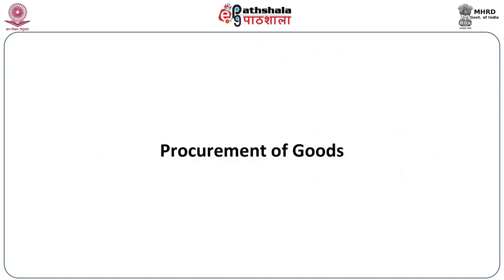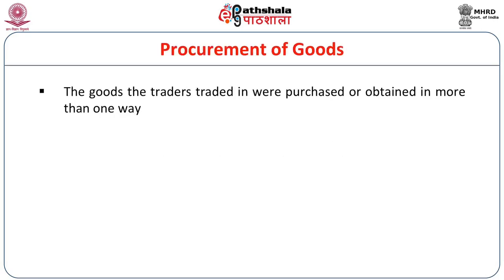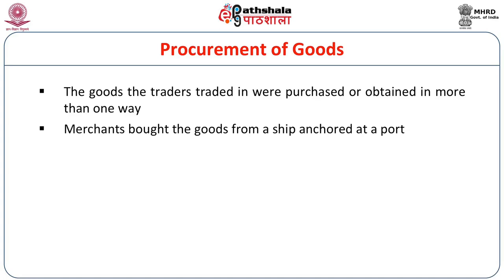Regarding the procurement of goods, the goods traders dealt in were purchased or obtained in more than one way. Merchants bought goods from a ship anchored at a port. Port is an important gateway to overseas trade and also an important place where economic activities — particularly unloading, loading, and merchandise activities — are performed. Port is a place from where many things could be bought.